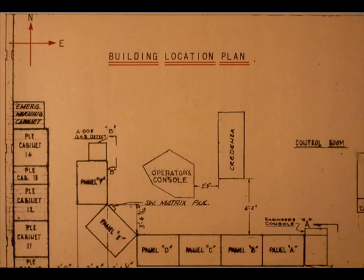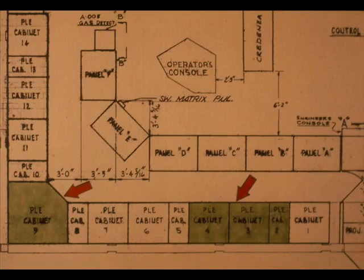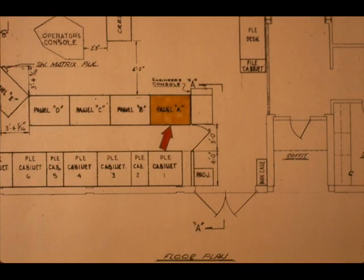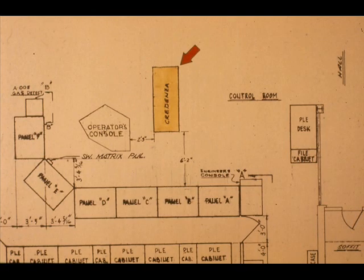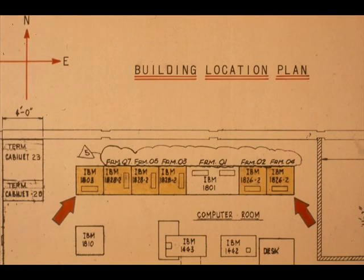The control center items for Loop F302 can be found by using a building equipment location plan. Find Cabinets 2, 3, 4, and 9. Also find instrument panel A. Locate the credenza and the computer.